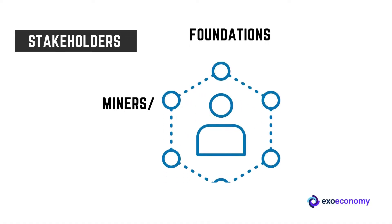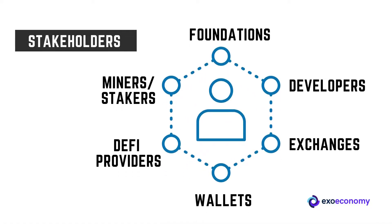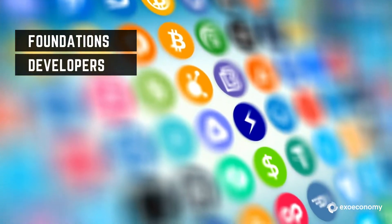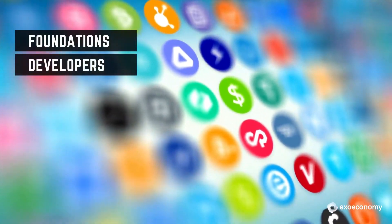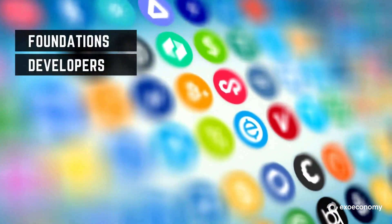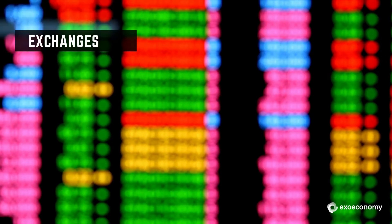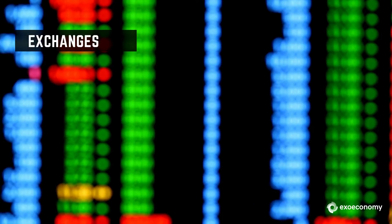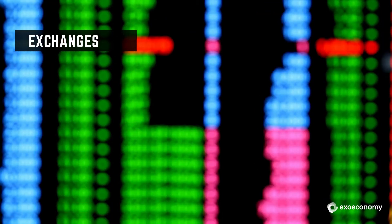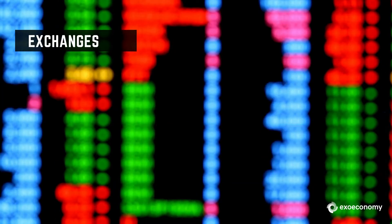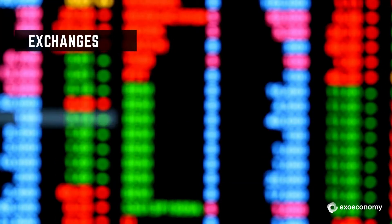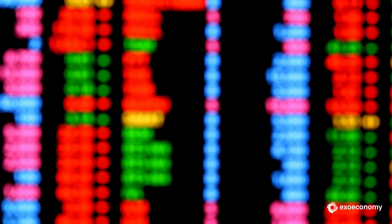The key stakeholders in a blockchain ecosystem are as follows. Blockchain foundations and developers design the architecture of blockchains — including Bitcoin, Ethereum, Ripple, etc. Cryptocurrency exchanges allow people to trade or buy cryptocurrencies in exchange for fiat currencies or other digital assets like Bitcoin. Some examples are Coinbase, Bitfinex, Binance, Uniswap, etc.